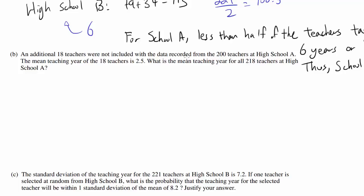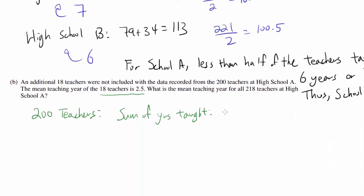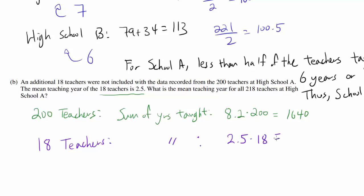An additional 18 teachers were not included with the data recorded from 200 teachers at high school A. The mean teaching year of the 18 teachers is 2.5. For the 200 original teachers, the mean was 8.2, so the sum of years taught is 8.2 times 200, or 1640. For the extra 18 teachers, the sum of years taught is 2.5 times 18, or 45.